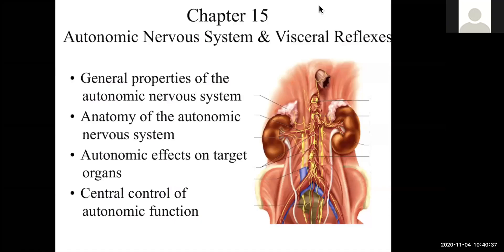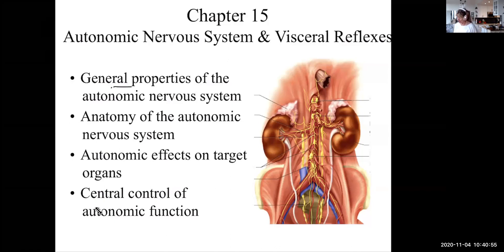Thank you for joining today. We're talking about the autonomic nervous system. This is the outline: we'll talk about the general properties, the anatomy, effects on target organs, and central control.